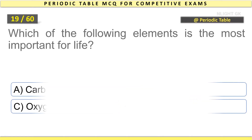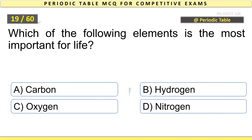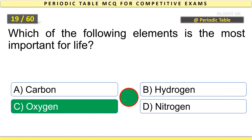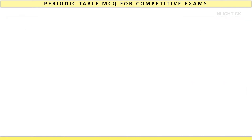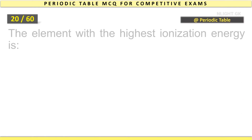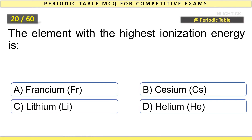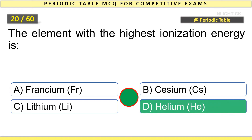Which of the following elements is the most important for life? Oxygen. The element with the highest ionization energy is Helium.